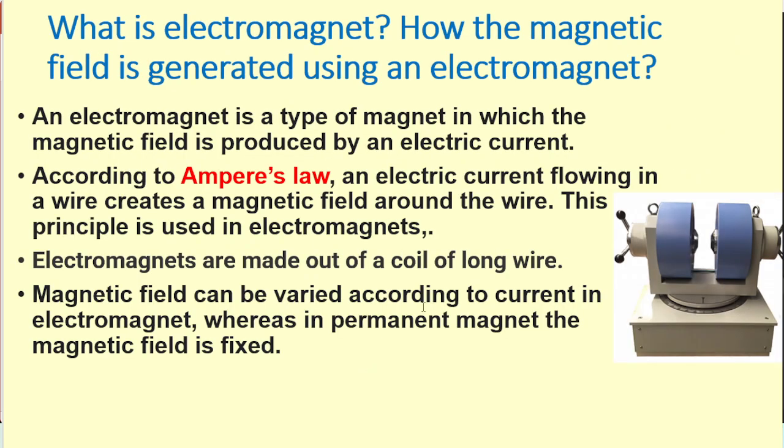What are electromagnets and how is the magnetic field generated using the electromagnet? An electromagnet is a type of magnet in which the magnetic field is produced by an electric current. According to Ampere's law, an electric current flowing in a wire creates a magnetic field around the wire. This principle is used in electromagnets. Electromagnets are made of coil of long wire, and magnetic field can be varied according to current in electromagnets, whereas in permanent magnets the magnetic field is fixed.